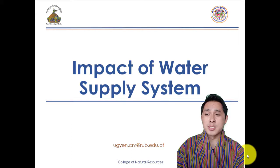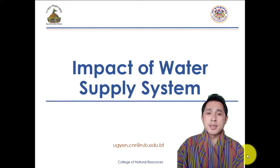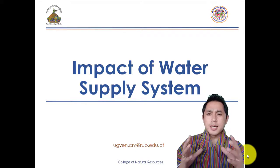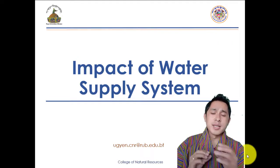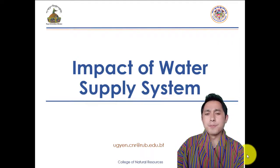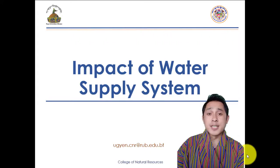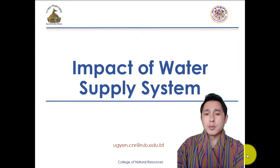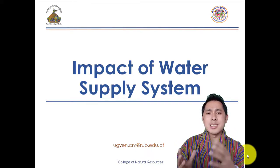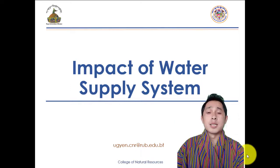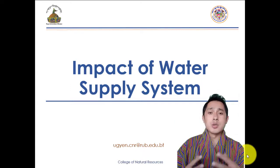So let's now get back to what the impact of water supply system is. Basically, a water supply system is a system comprised of reservoirs like tanks, a pipeline system, and including the output systems like water taps. We are going to see what exactly are the impacts that these have towards the environment, towards the climate, and towards our resources.